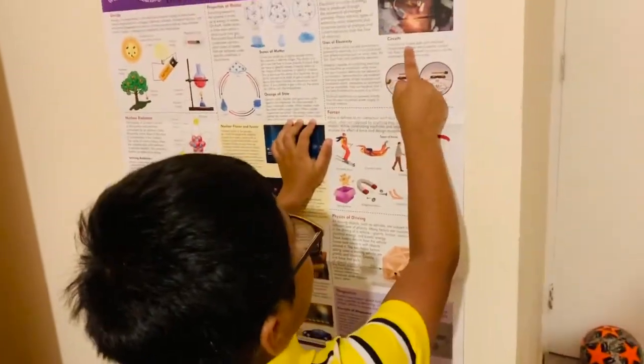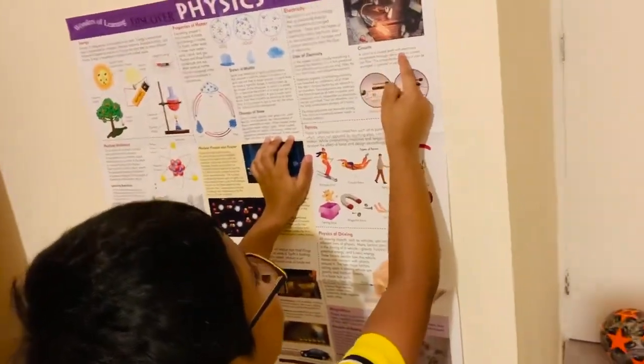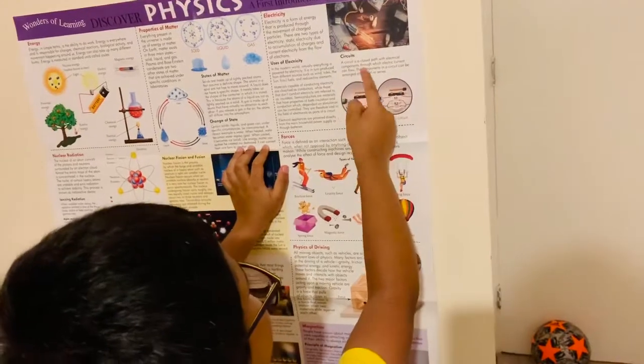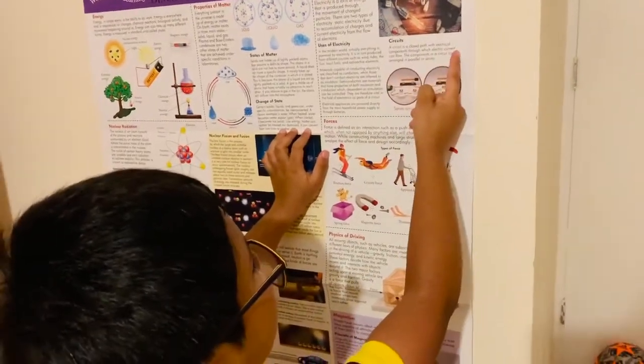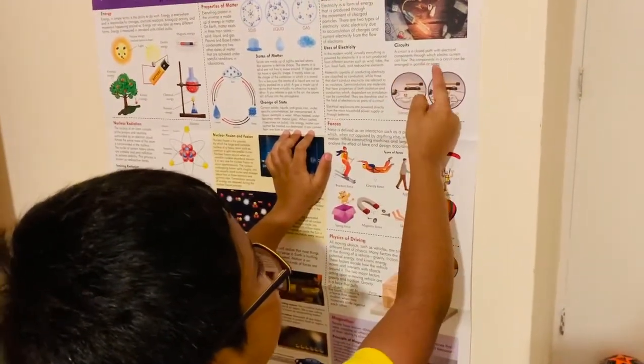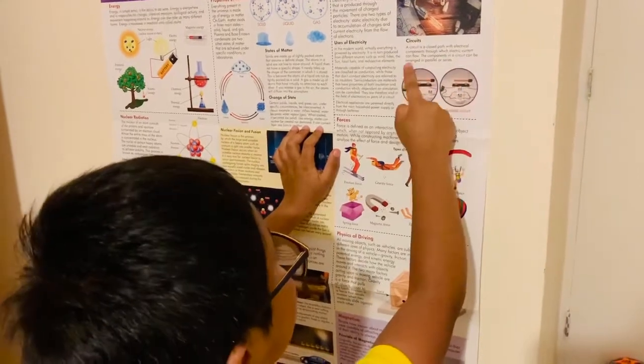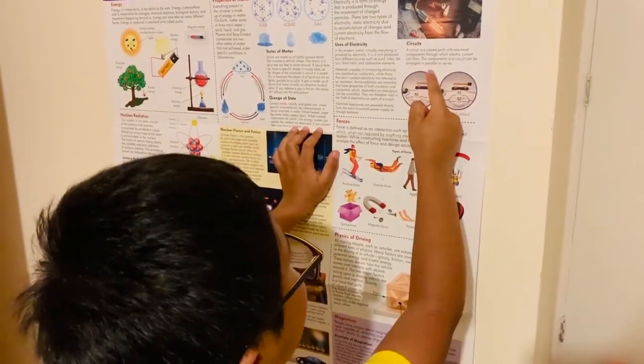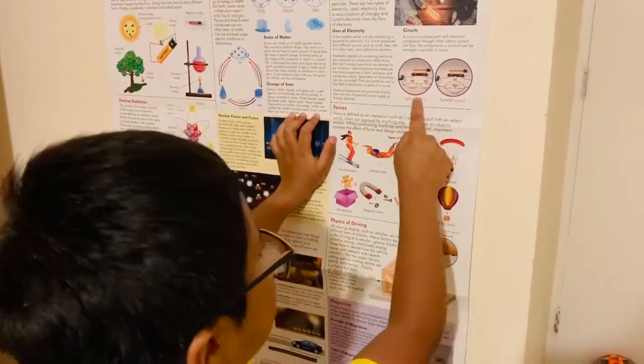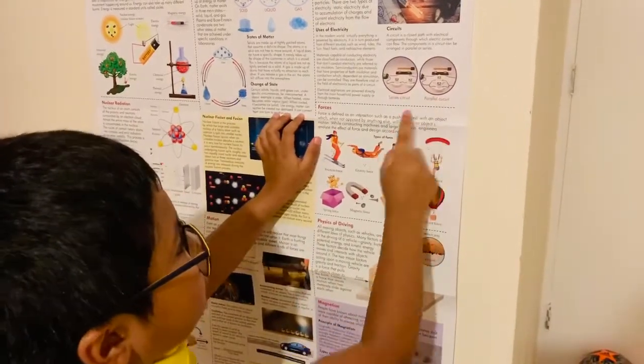A circuit is a closed path with electrical components through which electric currents can flow. The components in a circuit can be arranged in parallel or series. So here's a series circuit, here's the parallel circuit.